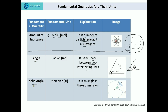The other complementary quantity is solid angle — it is an angle in three dimensions. When we take the angle in 3D space we call it a solid angle, and the unit associated with it is steradian. So we have finished the discussion about all the fundamental quantities as well as the complementary quantities and the units associated with them.